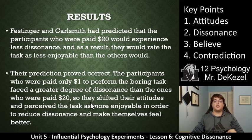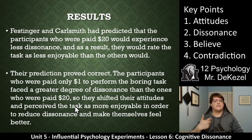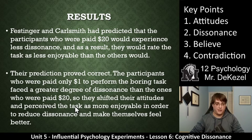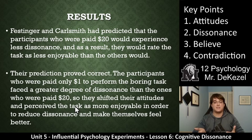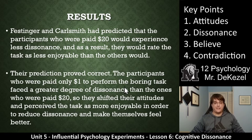The participants who were paid only $1 to perform the boring task faced a greater degree of dissonance than the ones who were paid $20. And because of this, they shifted their attitudes and perceptions of the task and rated it as more enjoyable to make themselves feel better. Someone given $20 had no internal incentive to lie and said it was a bad, boring task. The person paid $1 didn't have any external justification, so they had to make it up in their head — saying, 'Yeah, actually, that wasn't too bad,' to make it seem like they didn't waste all their time. It made them feel better about it.